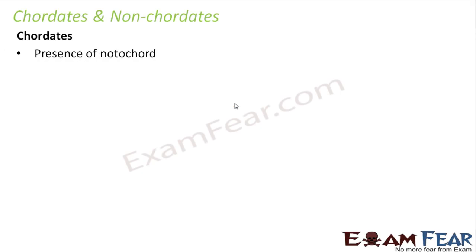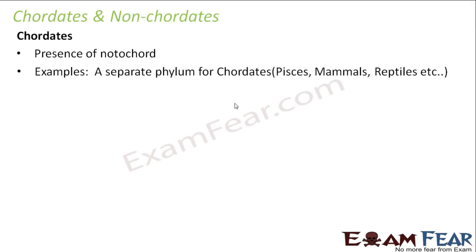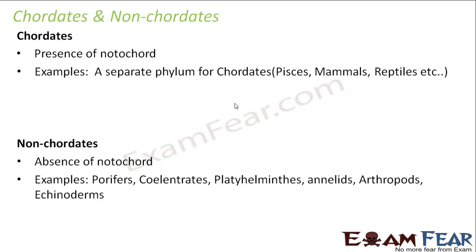Let us quickly see what are chordates and non-chordates. Chordates: presence of notochord. There is a separate phylum for chordates — it was the last of the 10 phyla discussed under the Animalia kingdom. Inside chordates there is a huge variety, with many classes like reptiles, amphibia, and mammals all falling under chordates. Non-chordates: absence of notochord — no rod-like structure is ever present. Examples are Porifera, Coelenterata, Platyhelminthes, Annelida, Arthropoda, and Echinodermata. So out of those 10 phyla, only one phylum is chordates; the rest are all non-chordates.